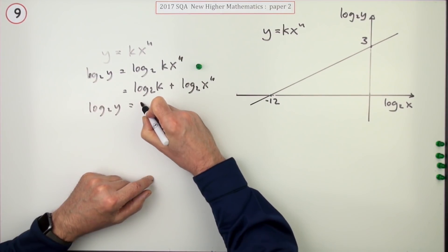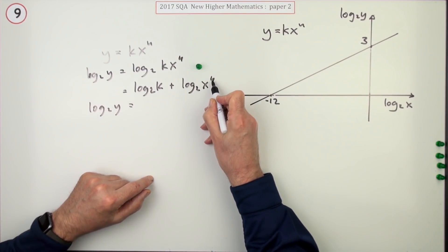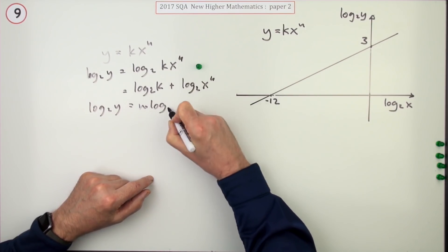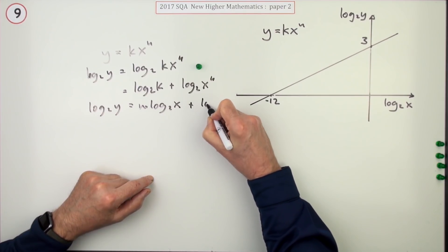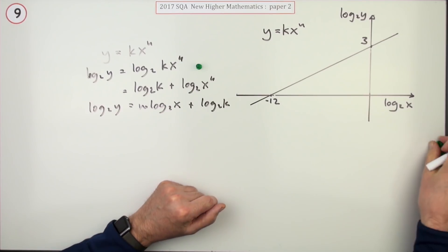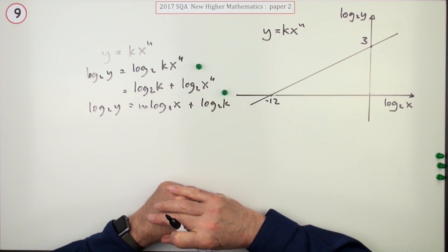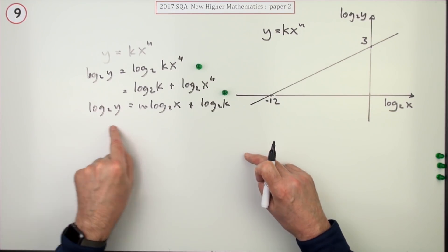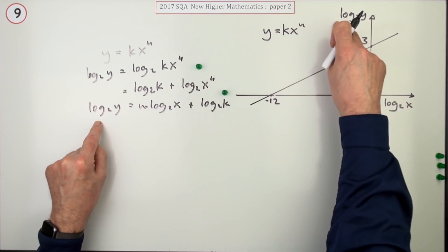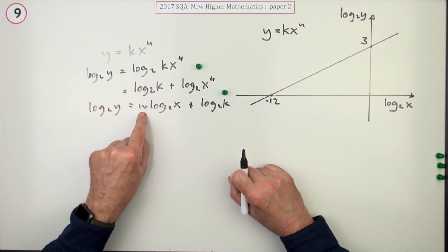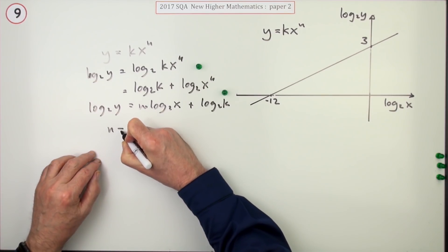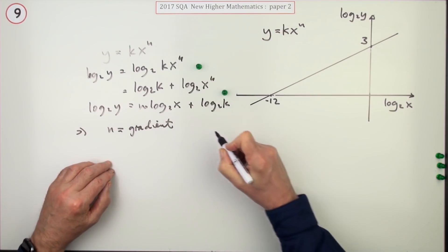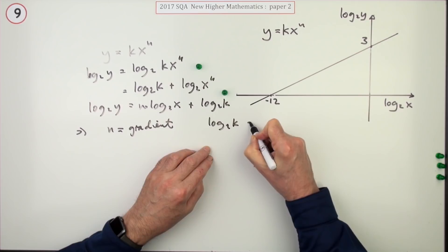So log base 2 of Y will be, maybe I'll put that one first, that N can now pop to the front, that power can become the multiplying number: N times log base 2 of X plus log base 2 of K. Now it's just a case of comparing that with this. That's the equation of a line. If that's the equation of a line, then N must be the gradient and log base 2 must be the Y intercept or the vertical intercept.